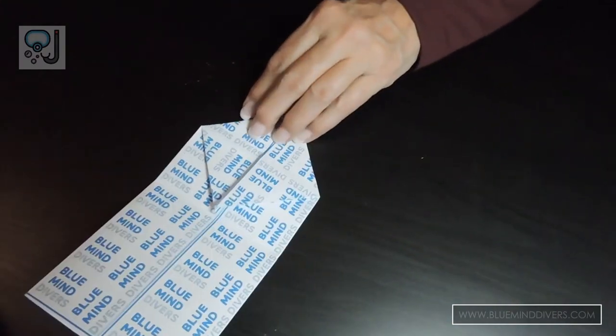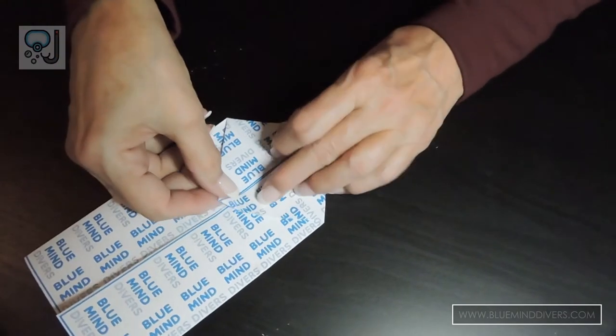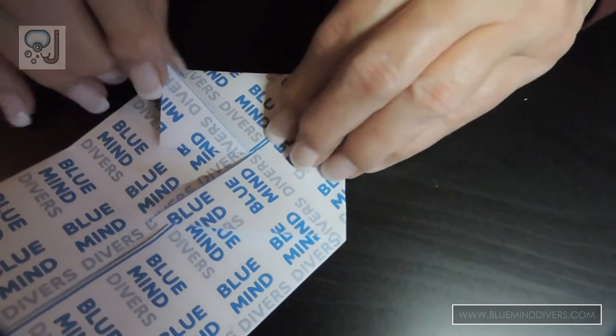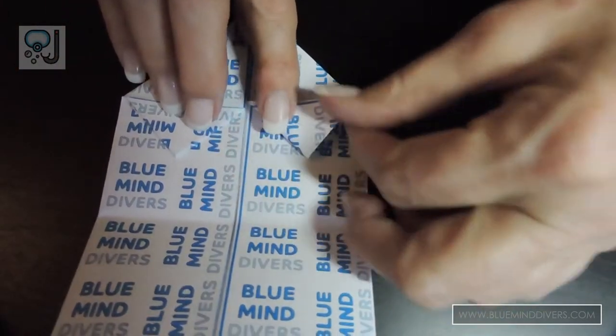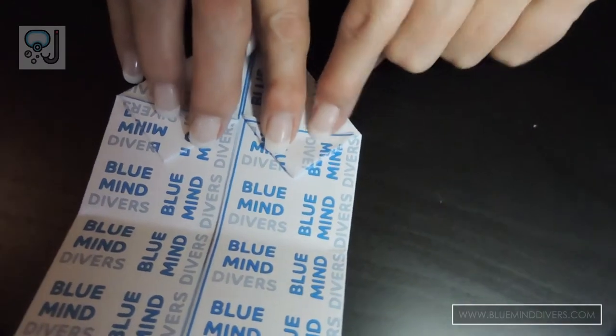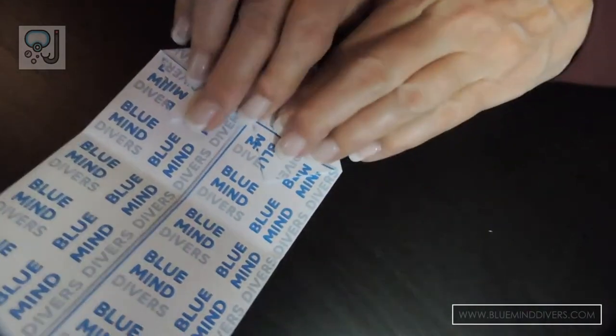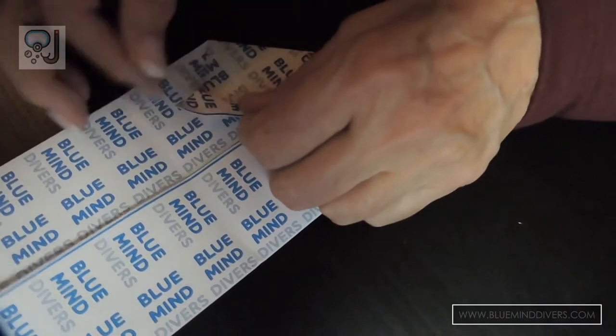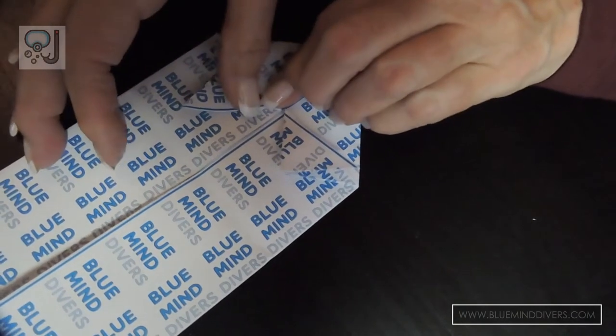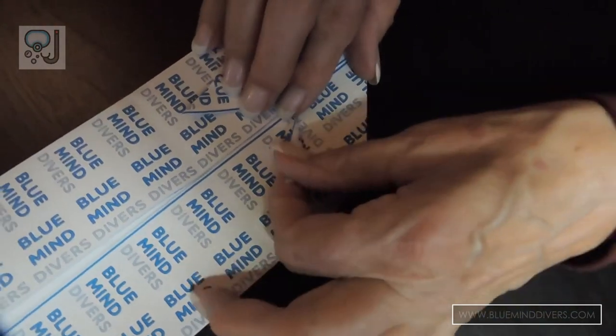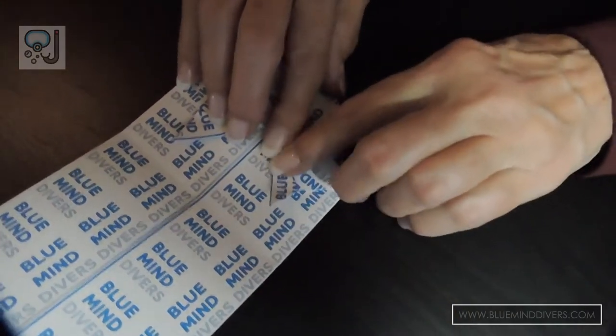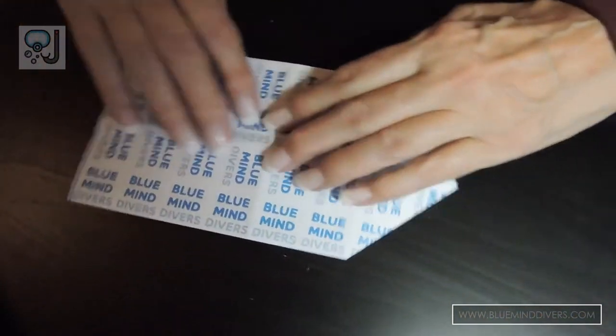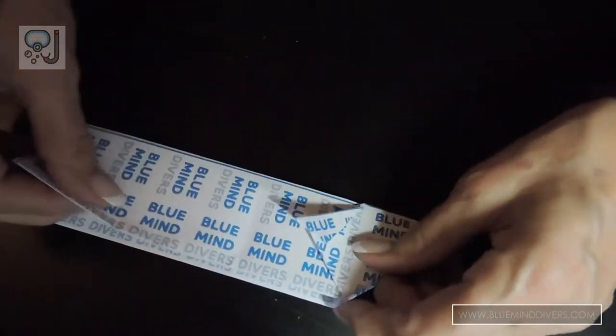We're now going to make the fins for our goldfish, so we fold each little side of the pocket down, and then we fold them back out, and then we fold it in half. Turn the piece over and fold it in half.